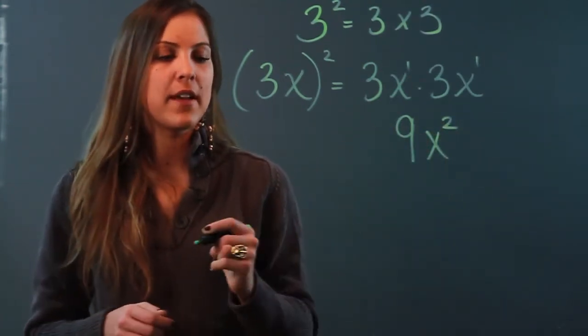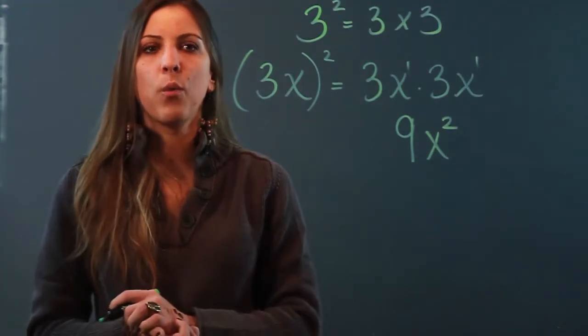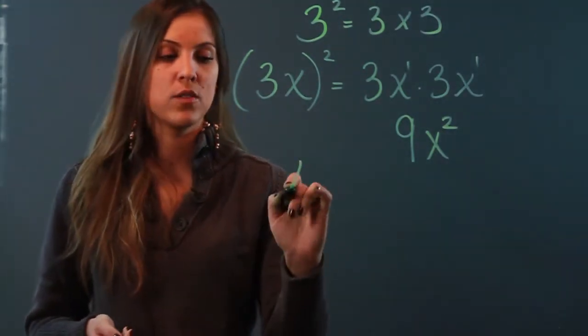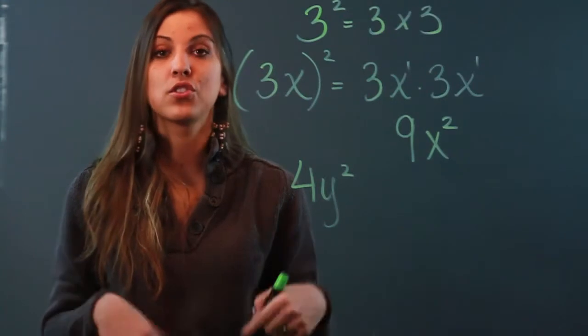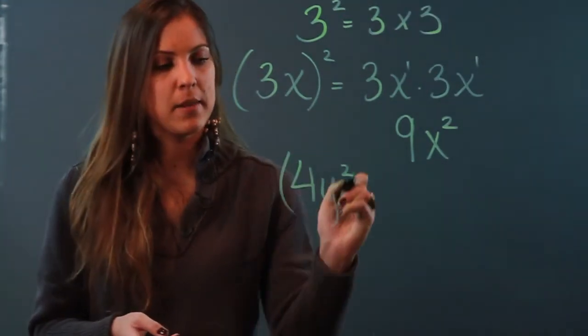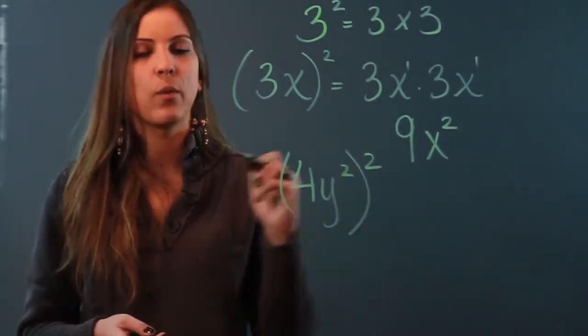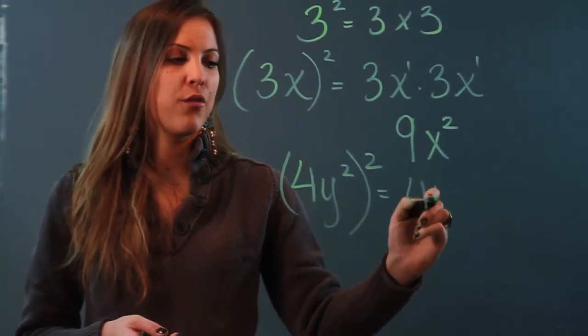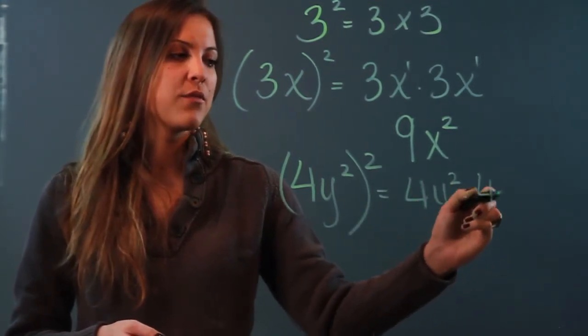Let's try another one. If I say to you, square 4y squared for me. So I have the term 4y squared and I want you to square that. So that basically means take this entire thing and square it. Multiply it by itself. 4y squared times 4y squared.